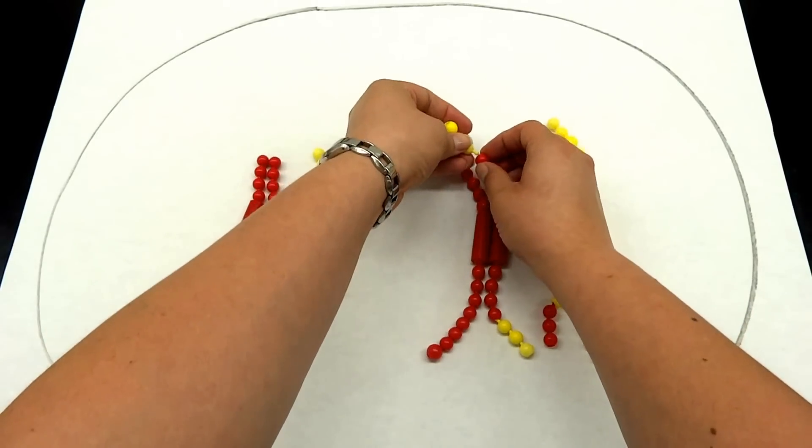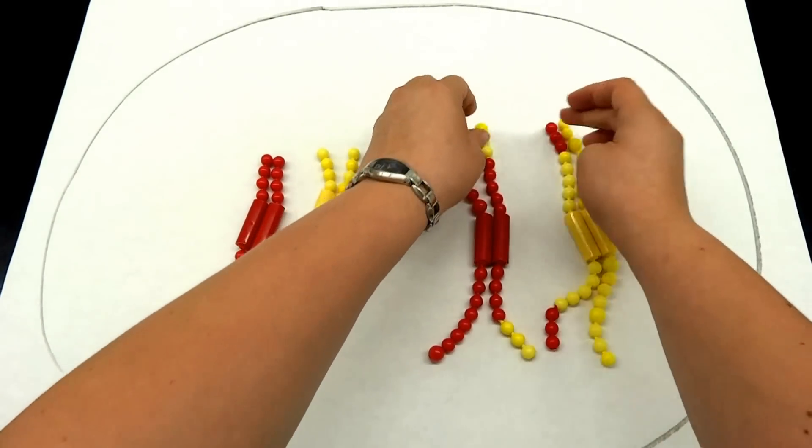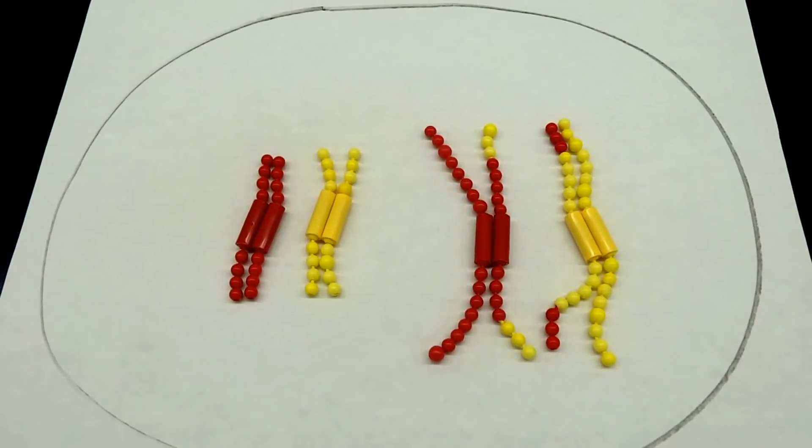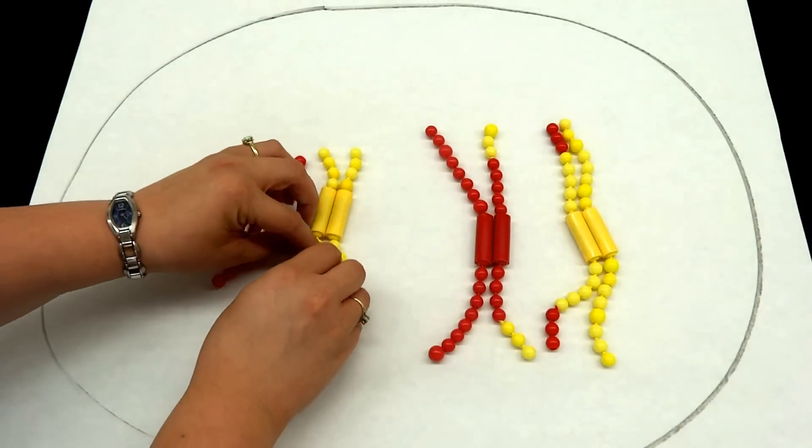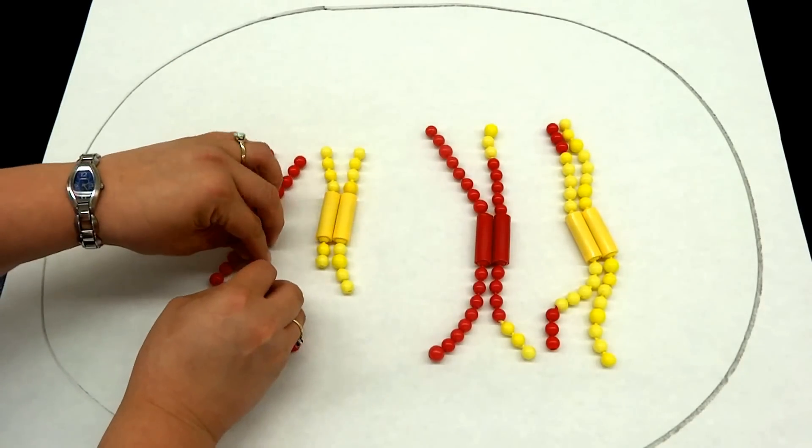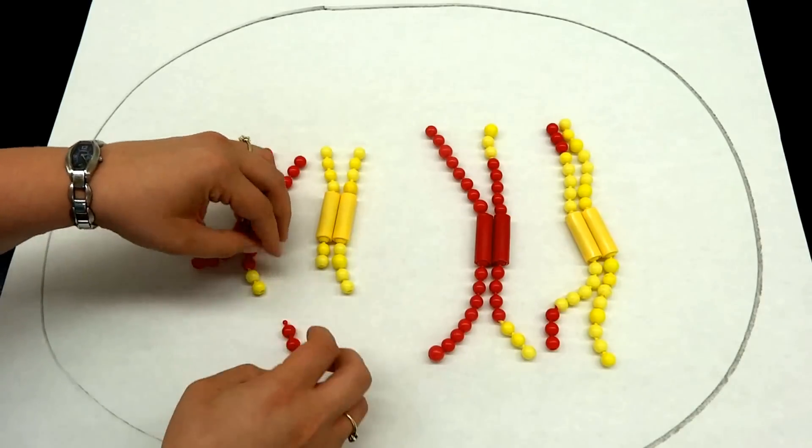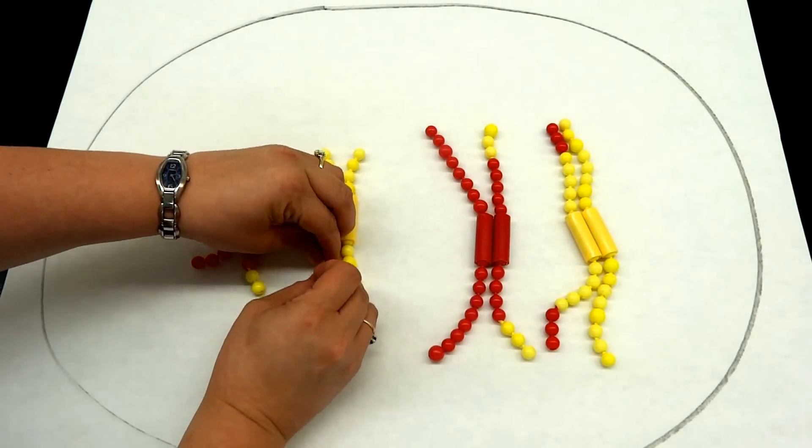This is going to represent our exchange of reciprocal DNA. If we do that on our shorter guys, we'll just go ahead and take two yellow and two red and flip-flop them.